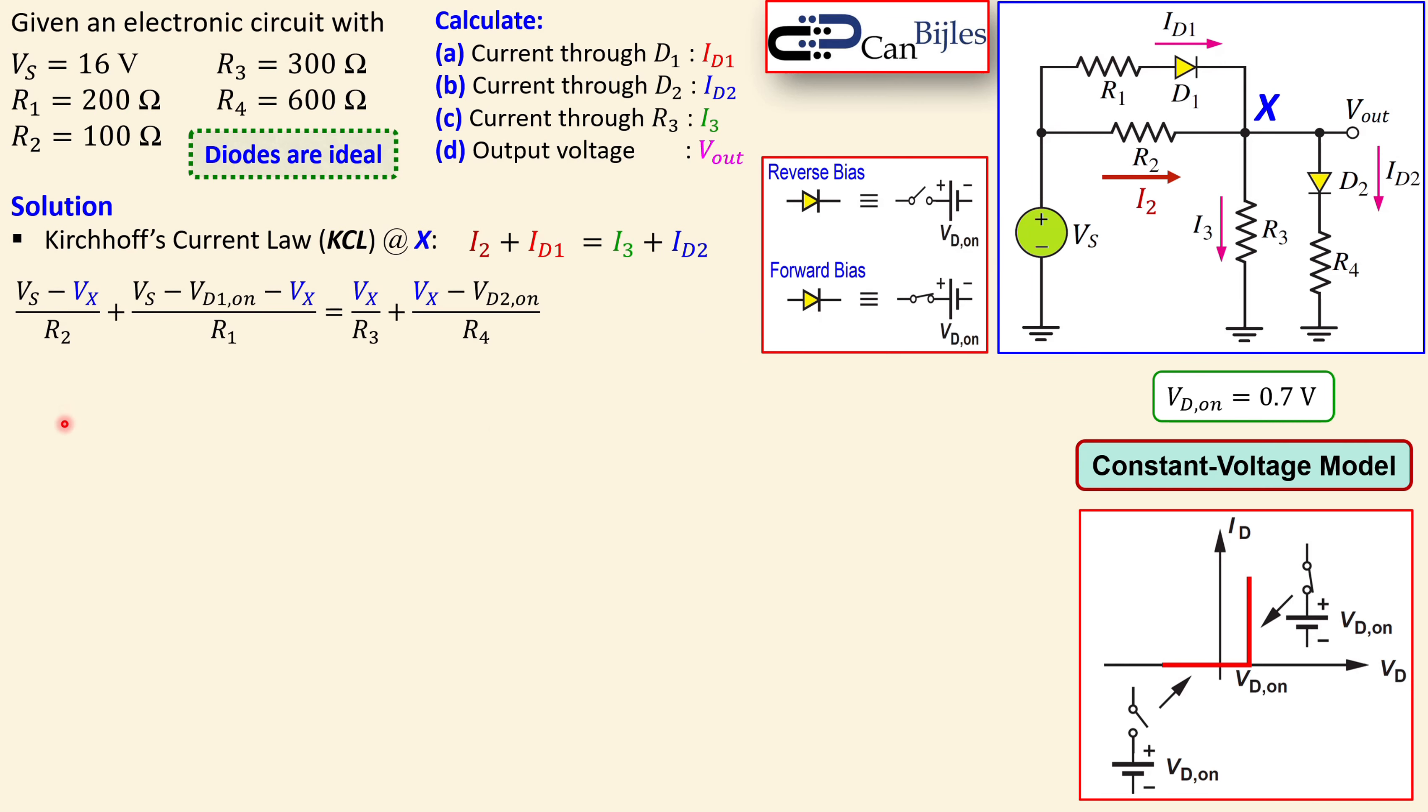For I2 I can say this voltage node Vs minus Vx over R2. That is this. Now for this branch, the top branch, I can say it is Vs minus VD1,on minus Vx over R1. That is this. Now I3 is just Vx over R3, and Vx minus VD2 over R4. That is this part of the branch.